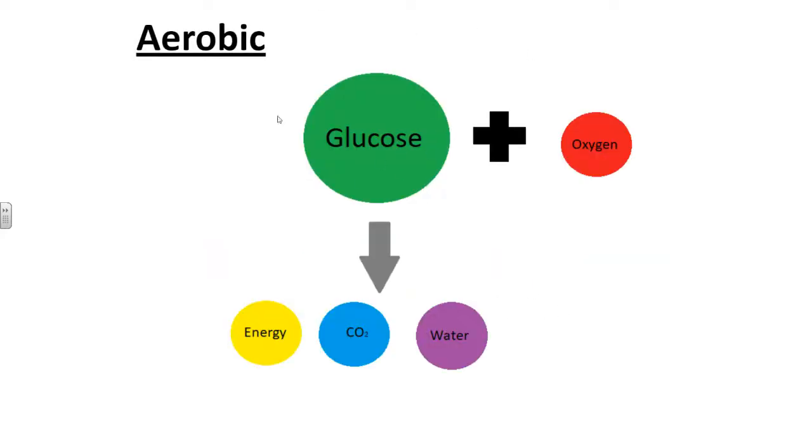In this one we've got a better representation. This circle is glucose. If you have oxygen, you can break it down into carbon dioxide, water and lots of energy.